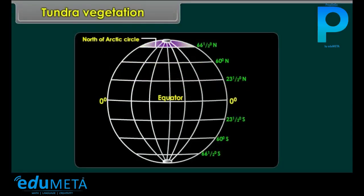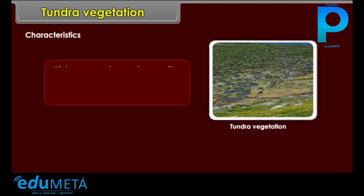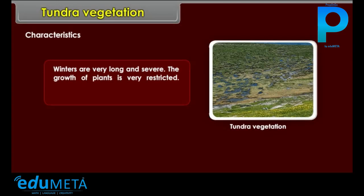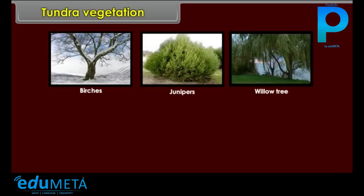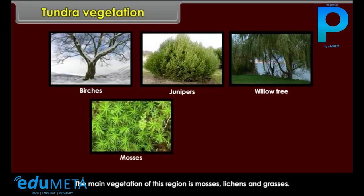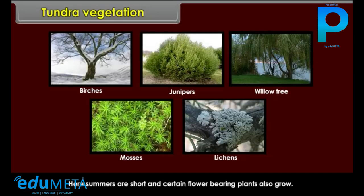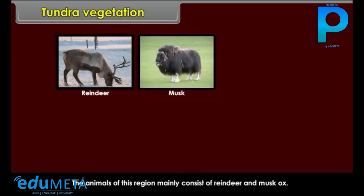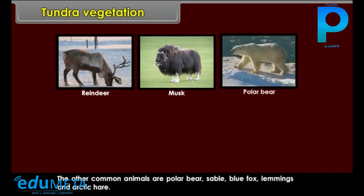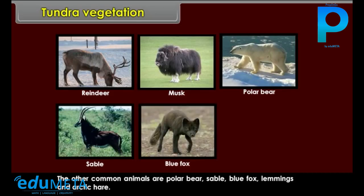Tundra Vegetation is found to the north of the Arctic Circle. Winters are very long and severe and the growth of plants is very restricted. Short, stunted plants and trees grow adjoining the taiga forests, consisting of birches, junipers and willow trees. The main vegetation of this region is mosses, lichens and grasses. Summers are short but certain flower-bearing plants also grow. The animals of this region mainly consist of reindeer and musk ox. Other common animals are polar bear, sable, blue fox, lemmings and arctic hare.